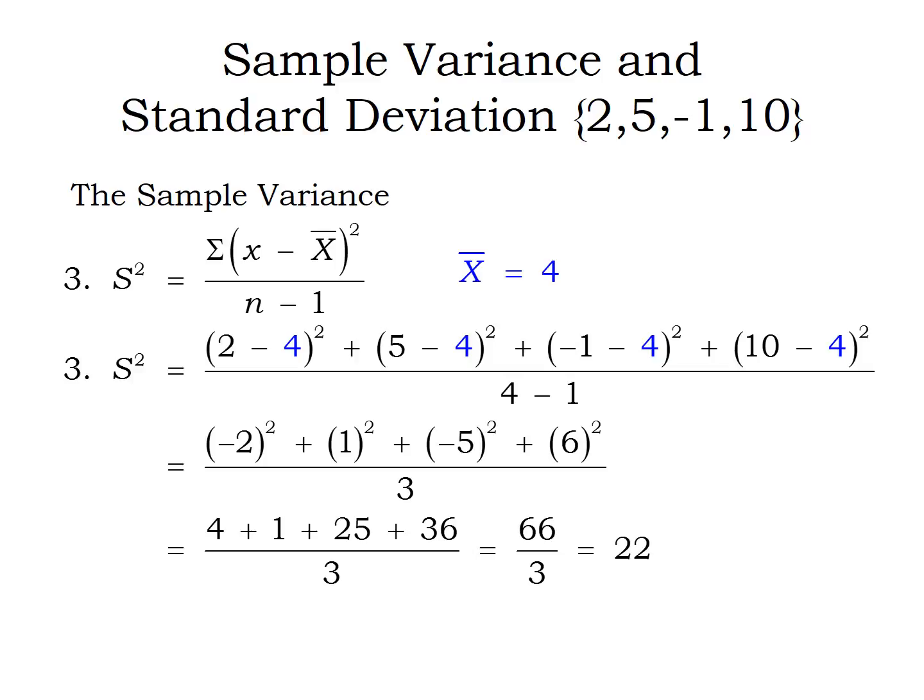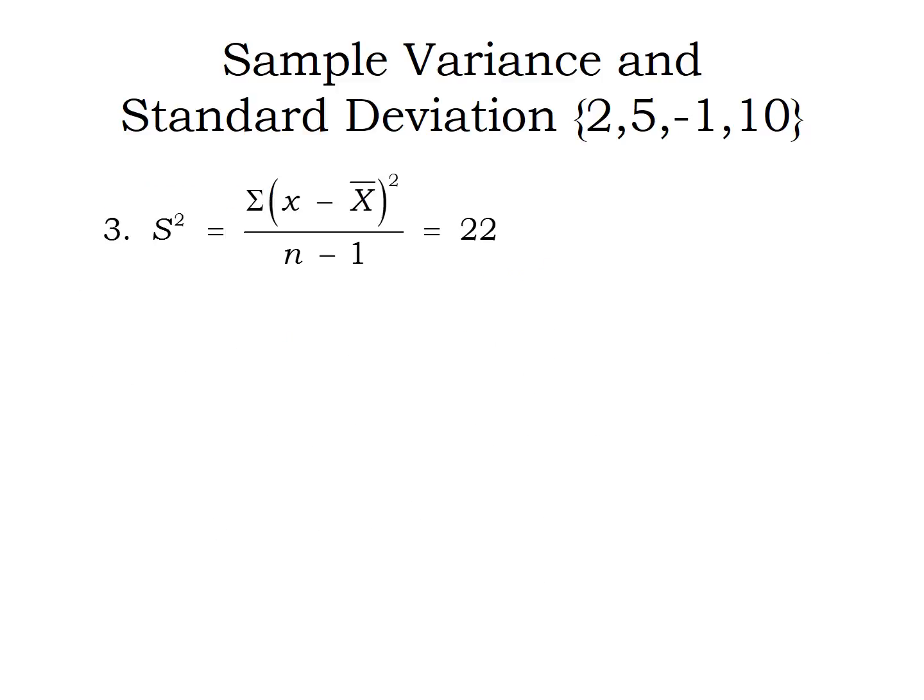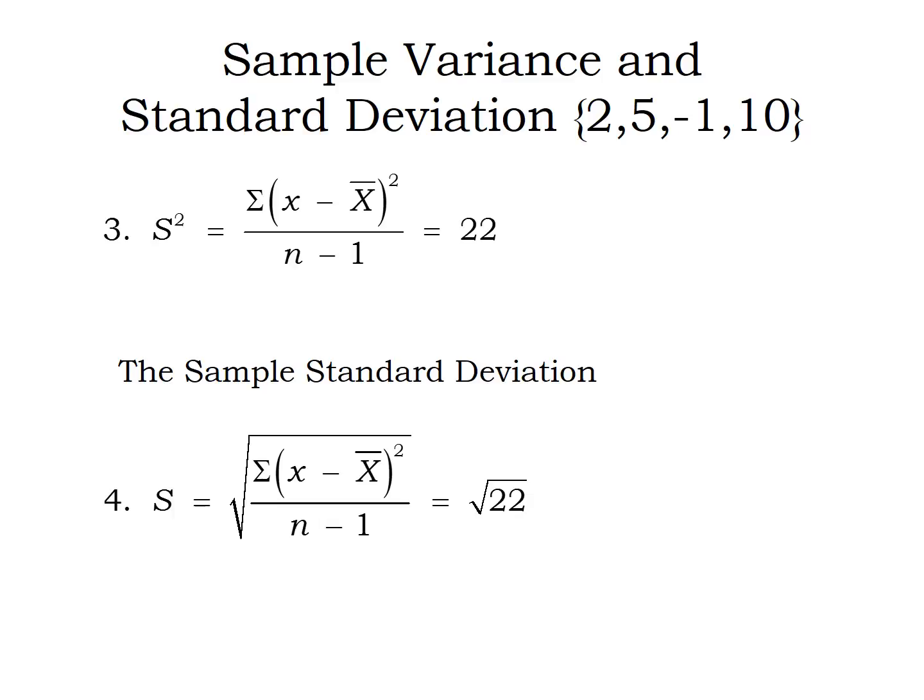We'll talk later about what exactly that number means and what it's trying to tell us. For now, we're just learning how to operate and navigate this particular formula. So the final statistic, the fourth statistic we want to look at is the sample standard deviation. Notation-wise, the symbol for the sample standard deviation is just s. And so s, by definition, is the square root of s squared. So the formula for the sample standard deviation is the formula for the sample variance with a big giant square root symbol over the top. So for this sample, we calculated the variance already to be 22. So literally, the sample standard deviation is the square root of 22.